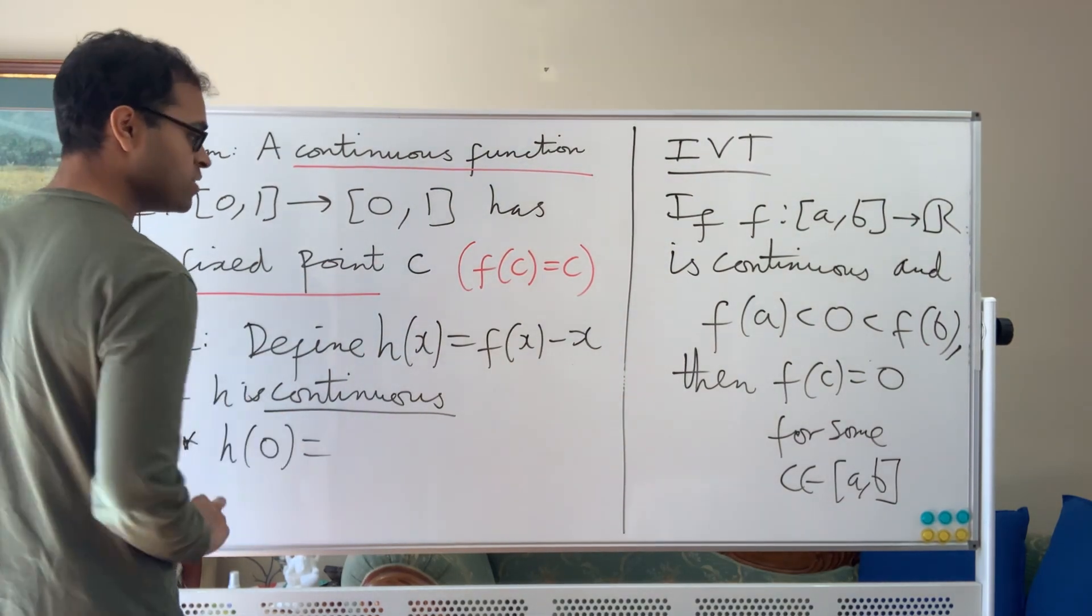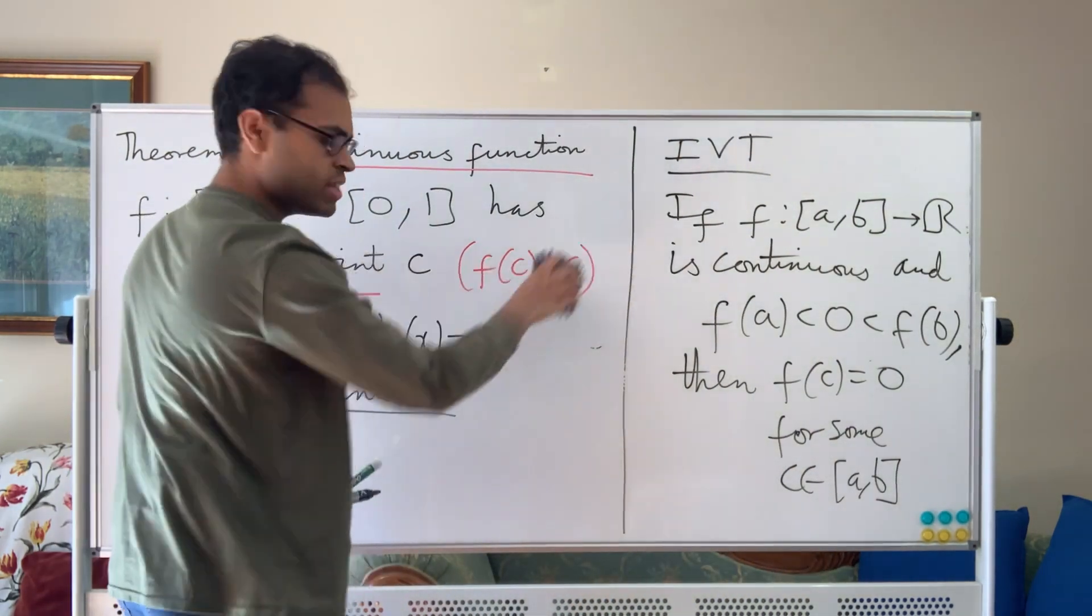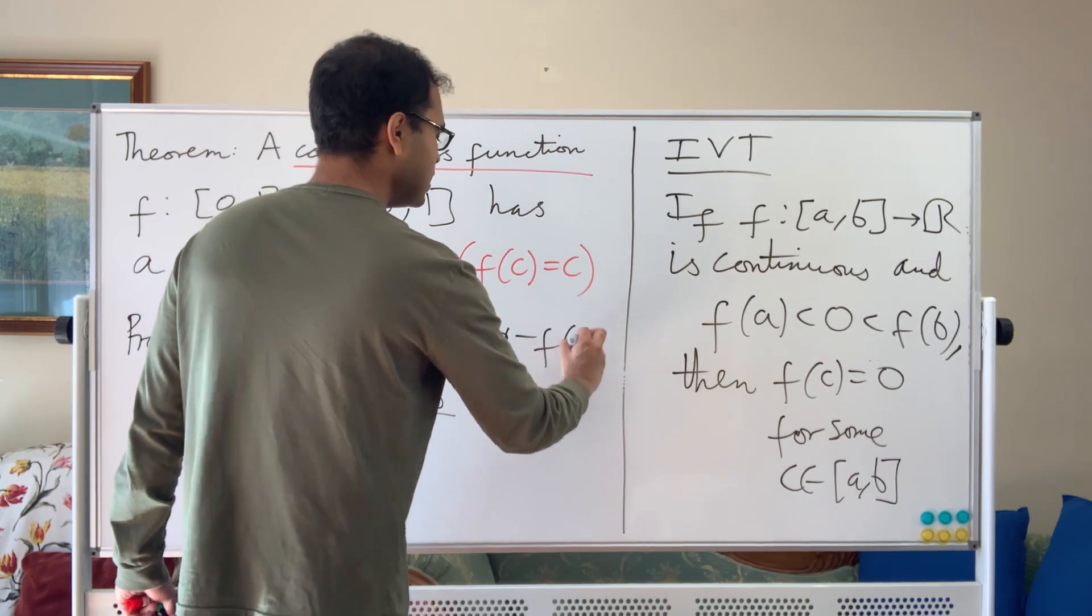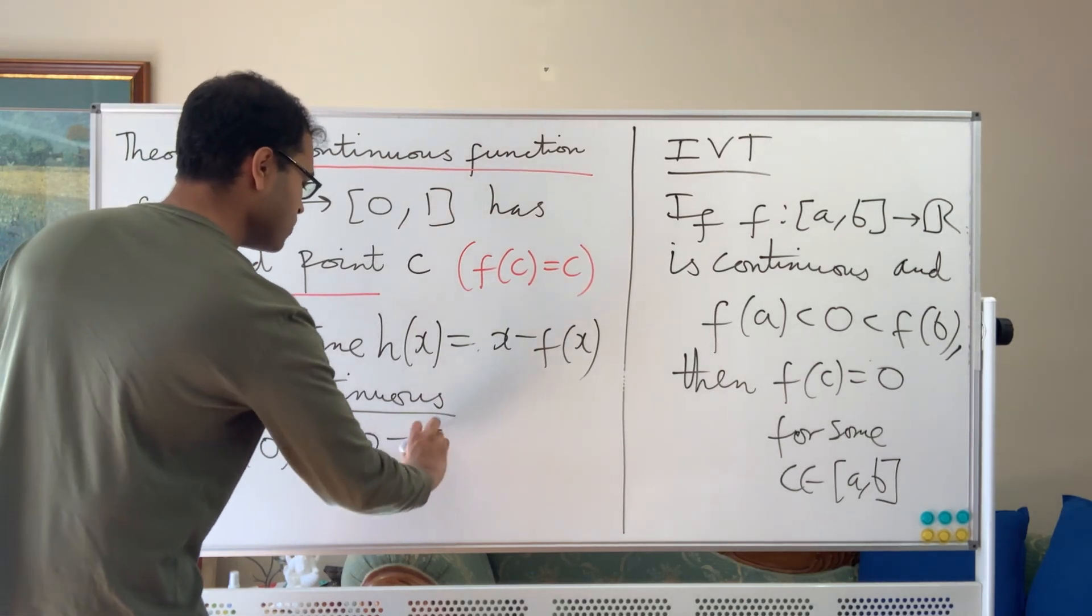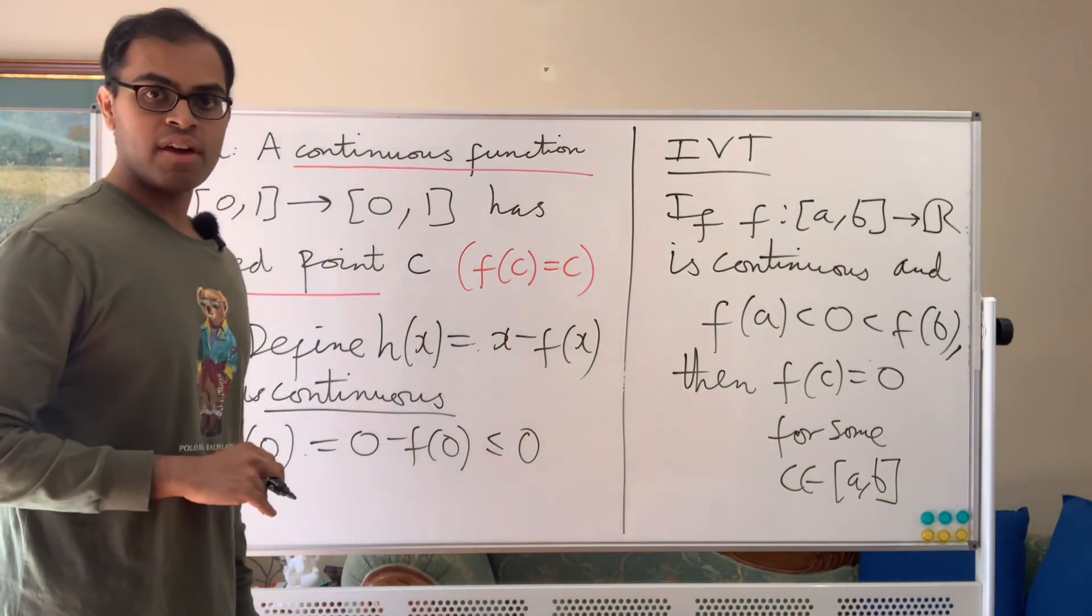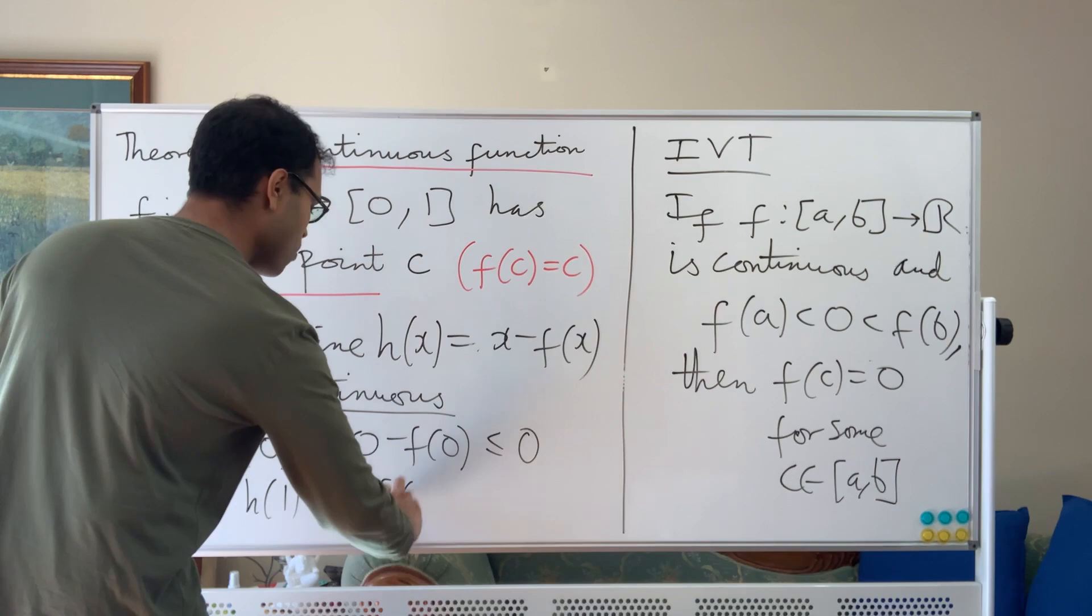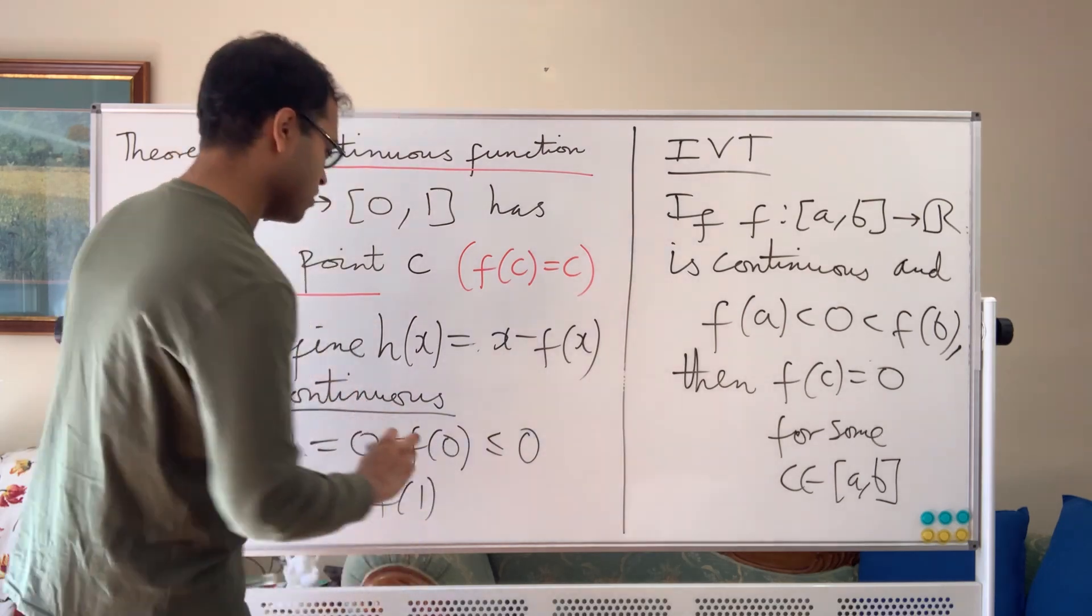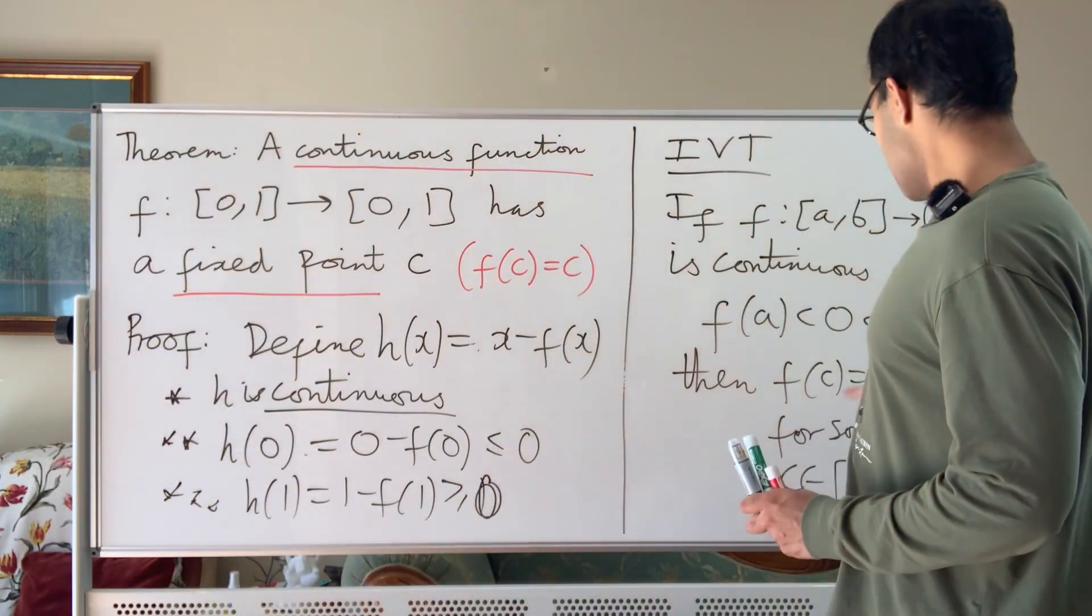Property two is that h(0) is going to be 0 minus f(0), which is less than or equal to 0. Why? Because f(0) is at least 0. f is a function into the interval [0,1], so all the values of f are going to be at least 0. Therefore, negative f(0) is less than or equal to 0. And h(1) is going to equal 1 minus f(1), which, because f is a function into the closed interval [0,1], is non-negative because f(1) is less than or equal to 1. So this is at least 0. Therefore, we have gone from a negative value to a positive value.